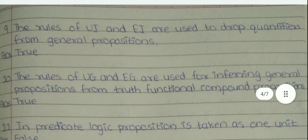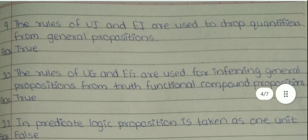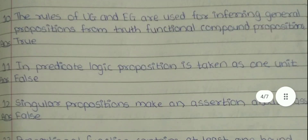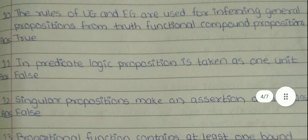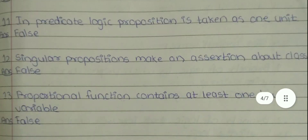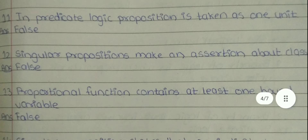10. The rules of UG and EG are used for inferring general propositions from truth functional compound propositions. The answer is true. 11. In predicate logic, proposition is taken as one unit. The answer is false. 12. Singular propositions make an assertion about class. The answer is false.